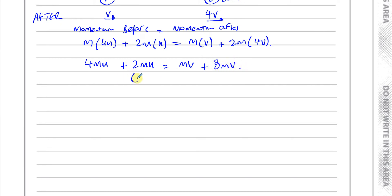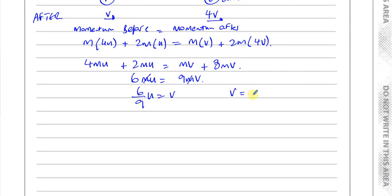So that gives us 6MU equals 9MV. The M's cancel out, and dividing both sides by 9 gives us V equals 6/9 U, so V is 2/3 U.